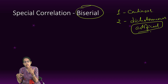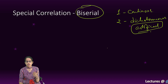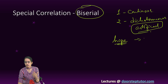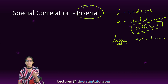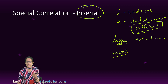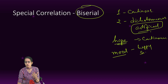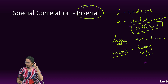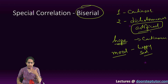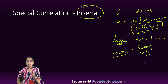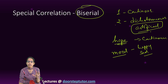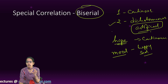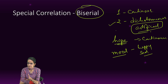For example, if I want to understand the relation of hope and mood — hope here is a continuous variable. On the other hand, what is mood? For my study, I am dividing mood into happy or sad, but in reality, mood can be in various forms. But only for my study, I am taking it as happy or sad. Therefore, what I am using is a dichotomous variable, but it is artificially dichotomous. And in this case, we would apply biserial correlation.